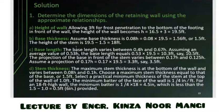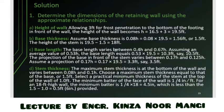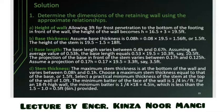The stem height is the total height minus the base thickness: 19.5 - 1.5 = 18 feet. The base length varies between 0.4H to 0.6H. Taking an average value for safety, the base length = 0.5 × 19.5 = 9.75, approximately 10.3 feet — actually 0.53 × 19.5 = 10.3 feet.